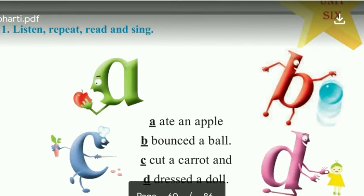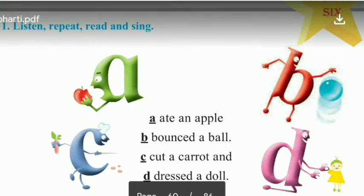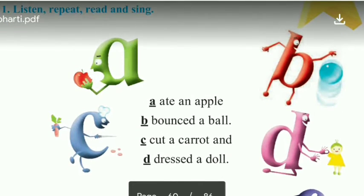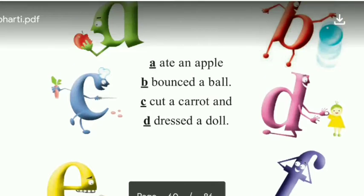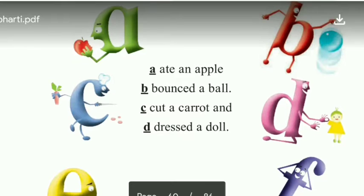A ate an apple. You know what letter A is called? Apple. B bounced a ball. What letter B is called? Ball, bounce a ball. Here we can see the picture of letter B. C cut a carrot. Letter C is called carrot. D dressed a doll. Letter D, doll ko dress kar raha hai, doll ko kapde pehna raha hai.